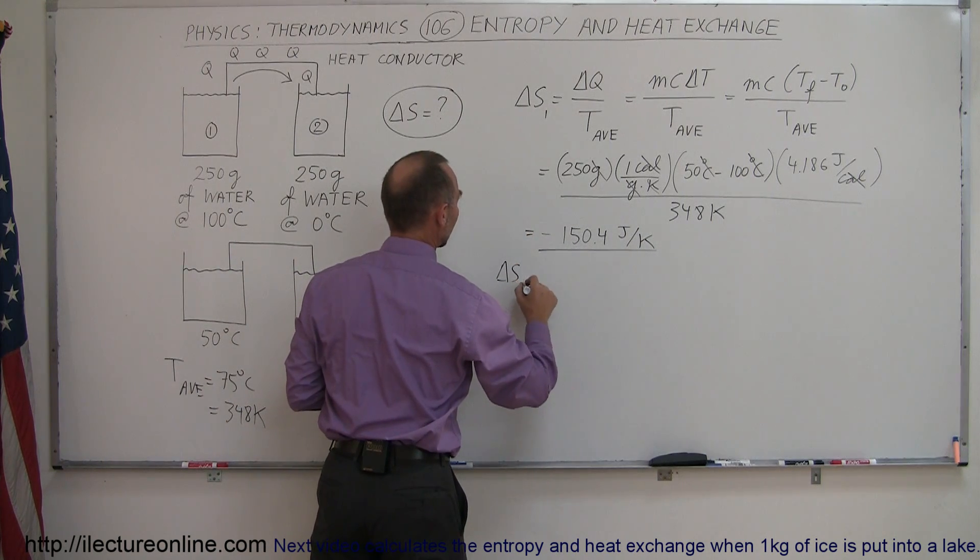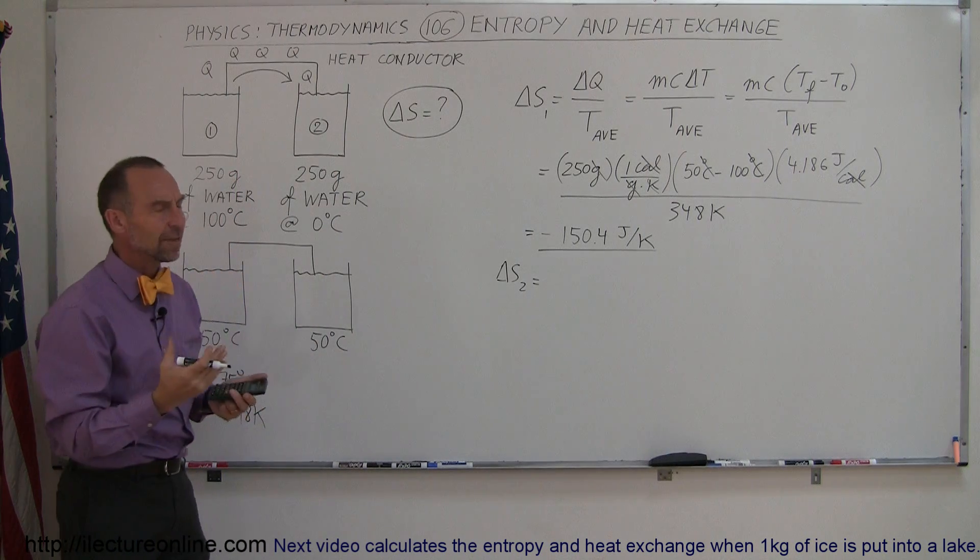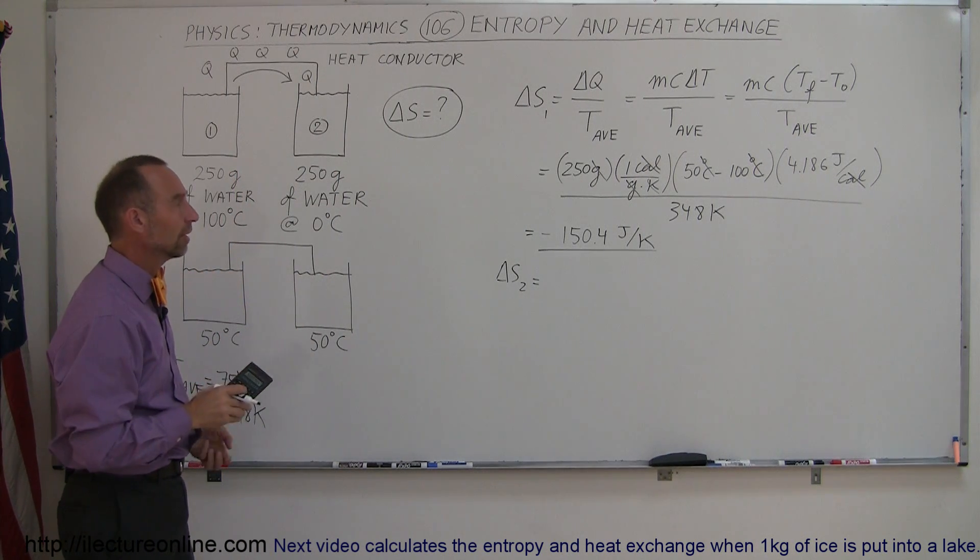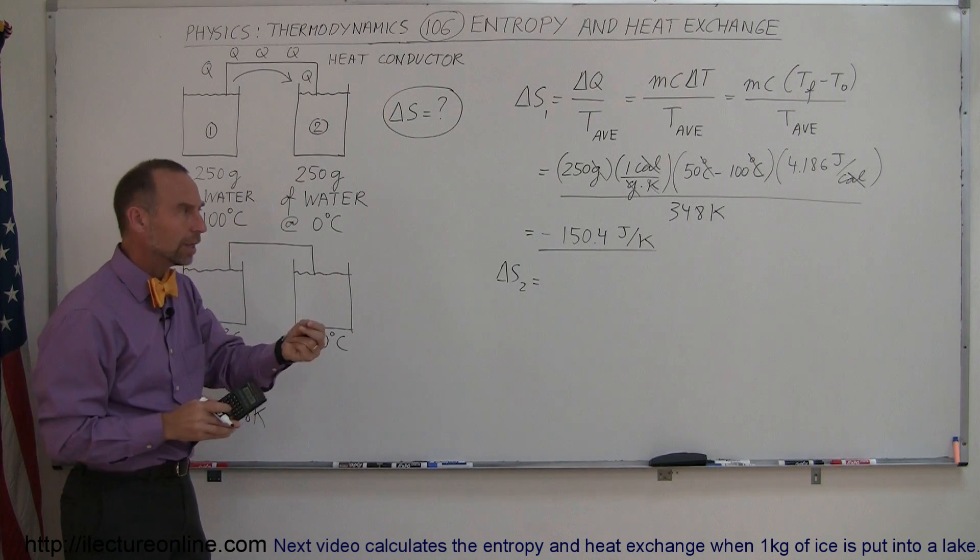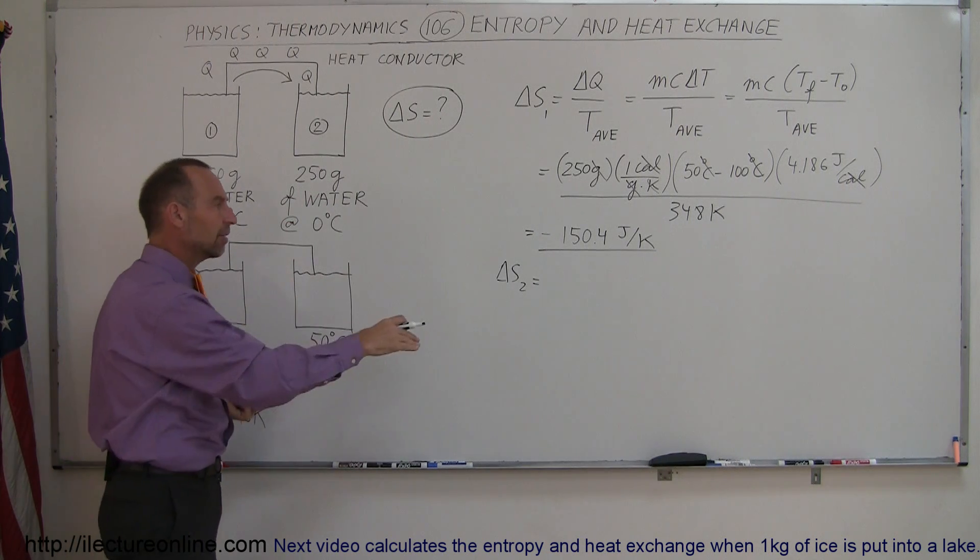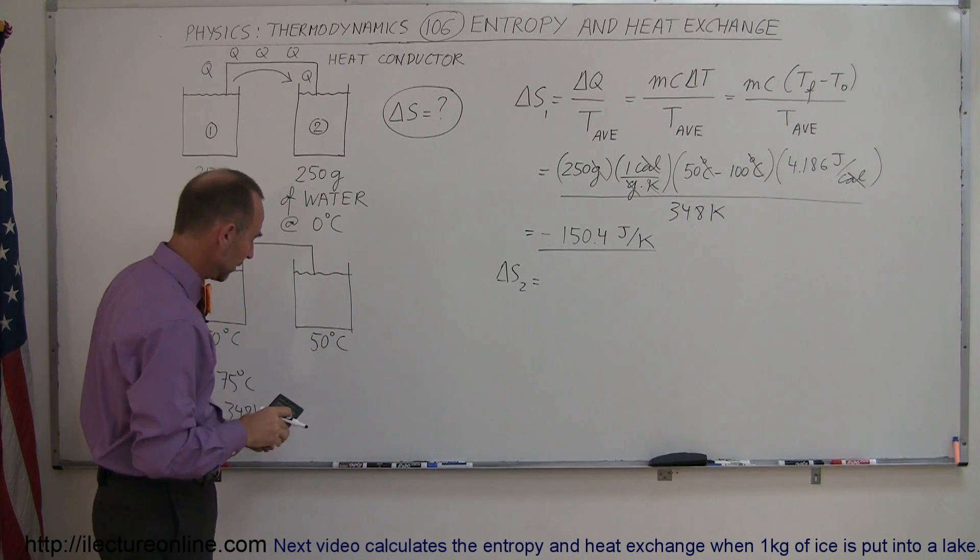So, now this was for cup 1, now we have to do the same for delta S for part 2. That's the cup that receives the heat, and since it's receiving heat, that delta S will be positive. And since it happens at a lower average temperature, that will be a greater quantity.